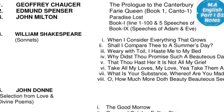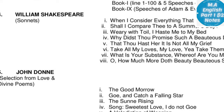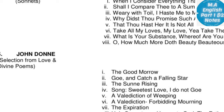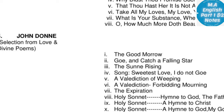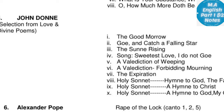William Shakespeare's sonnets — seven sonnets almost: When I Consider Everything That Grows, Shall I Compare Thee to a Summer's Day, Weary with Toil I Haste Me to My Bed, Why Didst Thou Promise Such a Beauteous Day, That Thou Hast Heard It Is Not All My Grief, Take All My Loves My Love, and What Is Your Substance Whereof Are You. Next poet is John Donne, selected from Love and Divine Poems.